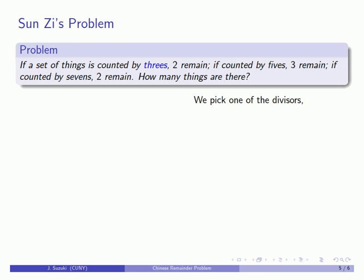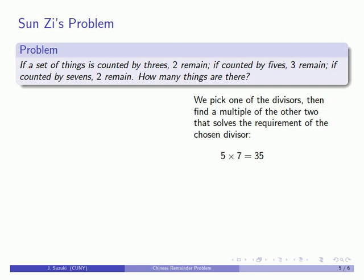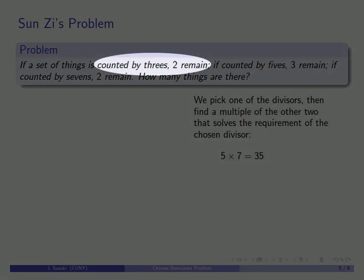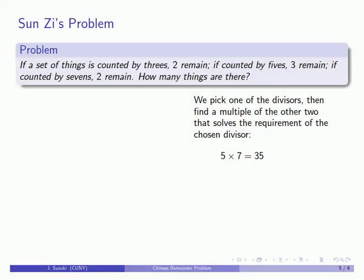We'll go through each of the divisors. Starting with divisor three, I want to find a multiple of the other two divisors. Five times seven is thirty-five, and I want to find a multiple of thirty-five that satisfies the first requirement: when divided by three, the remainder is two. In this case, we're lucky because thirty-five does in fact have remainder two when divided by three. So thirty-five solves the first requirement.